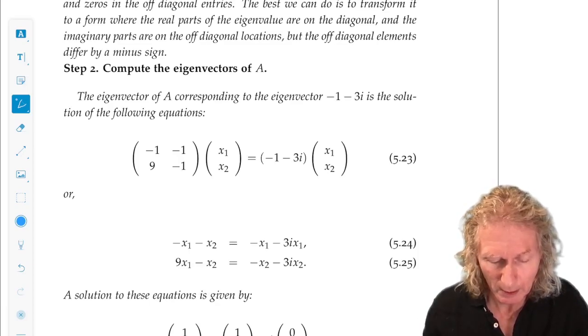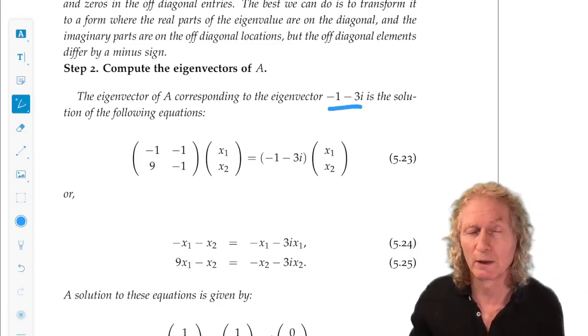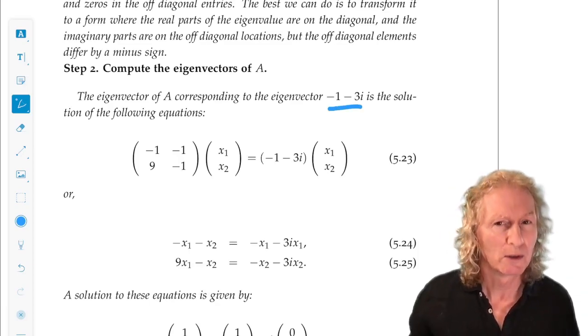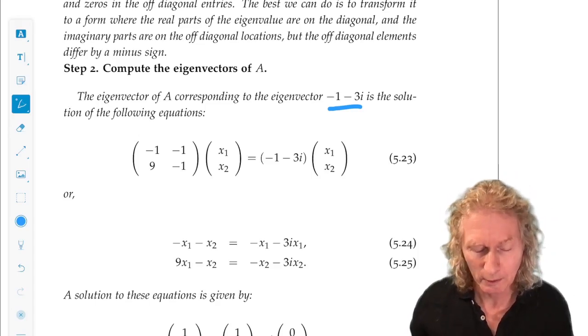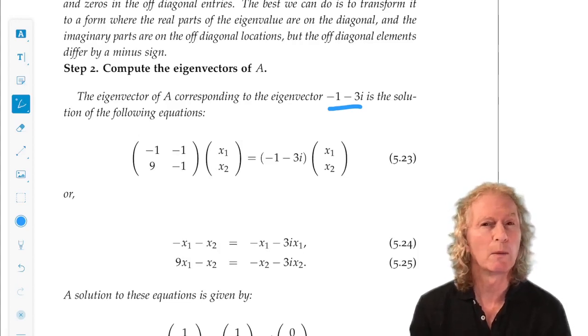Let's take one of the eigenvalues. Which one? We're going to learn later that it doesn't matter in a very particular sense. But, let's take minus 1 minus 3i.